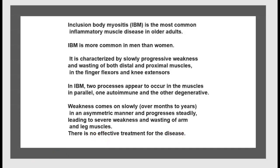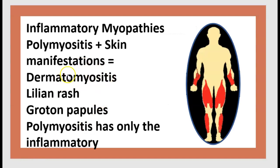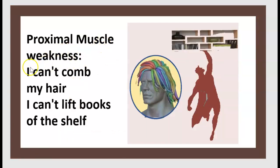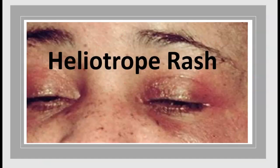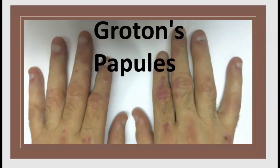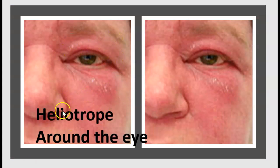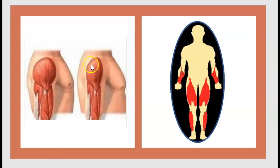Moving on to polymyositis and dermatomyositis: dermatomyositis is polymyositis with the addition of skin manifestations — specifically a lilac rash and Gottron's papules. Polymyositis has only inflammatory proximal muscle weakness. The patient may say: 'I can't comb my hair' or 'I can't lift a book.' Dermatomyositis features a lilac rash, V-sign, heliotrope rash around the eyes, and Gottron's papules on the fingers. Proximal muscle weakness is also present.